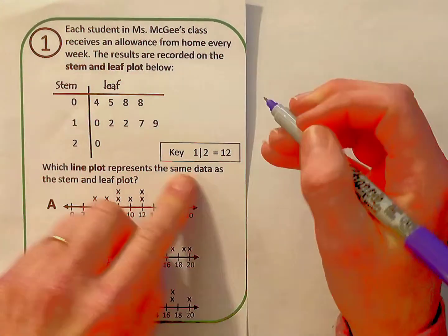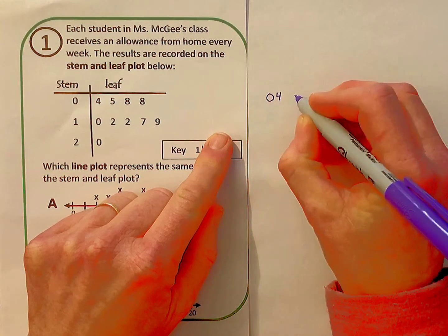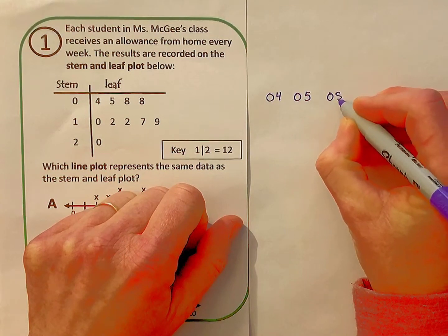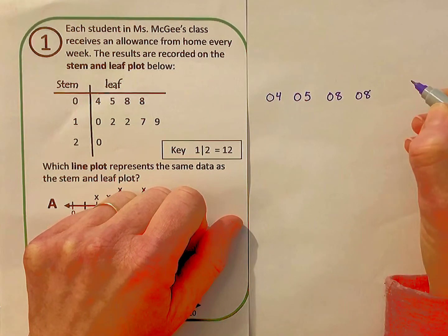Now I know how to go back and make sense of these numbers. For the first row, the stem is 0 and the leaf is 4, 5, 8, and 8. So I can interpret them as 04, 05, 08, and 08.